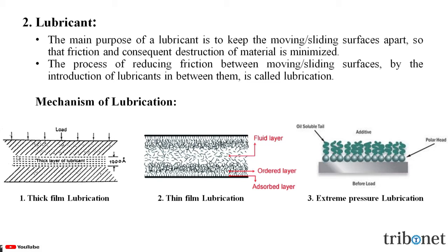The lubricant film covers the irregularities of the moving surfaces and forms a thick layer between them so that there is no direct contact between the material surfaces. The second mechanism is thin film lubrication. In this type of lubrication, it is preferred where a continuous film of lubricant cannot persist. In such cases, the clearance space between the moving surfaces is lubricated by a material which can get adsorbed on both the metallic surfaces by either physical or chemical forces. This adsorbed film helps to keep the metal surfaces away from each other at least up to the height of the peaks present on the surface.